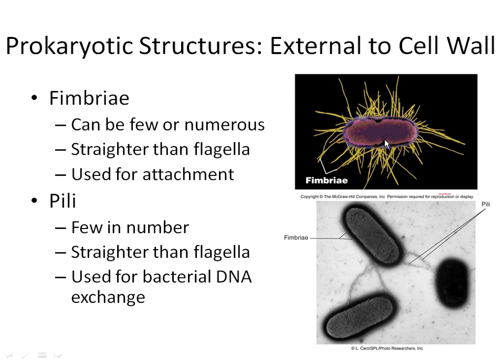Fimbriae are in no way related to cilia — cilia are found on very few eukaryotic cells and you can never have cilia in a prokaryotic cell. These are the only three appendages you can have on a prokaryotic cell — flagella, fimbriae, and pili. The last appendage is called pili; pili is plural, a pilus is singular. In this picture we've got three bacillus-shaped prokaryotic cells — the blurry halo around the edge is fimbriae, and those long extensions are pili.